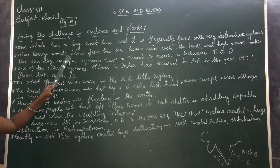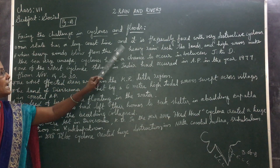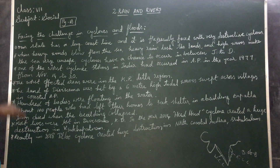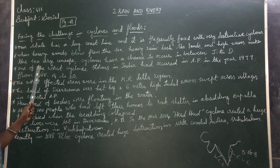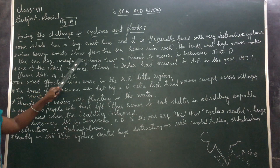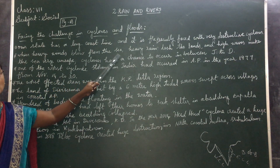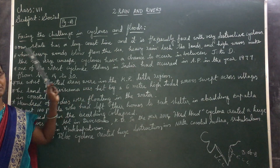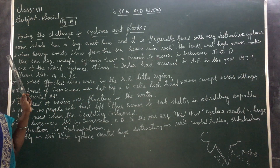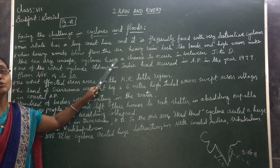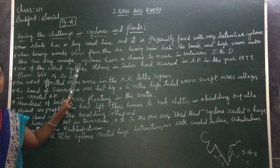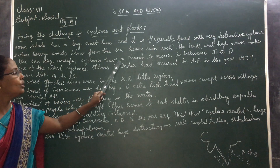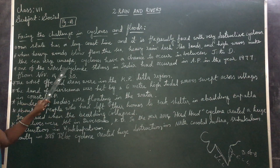When heavy winds blow from the sea, heavy rain lashes the land and high waves make the sea very unsafe. Cyclones have a chance to occur between June and December. Mostly, cyclones occur in coastal areas from June to December.